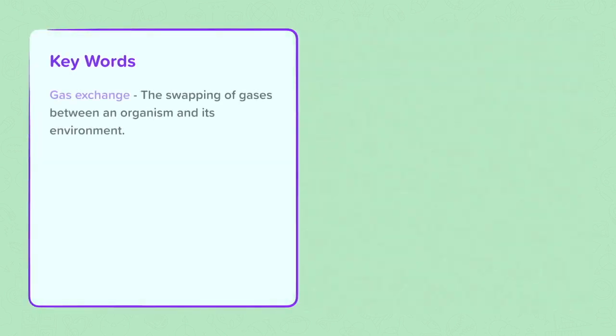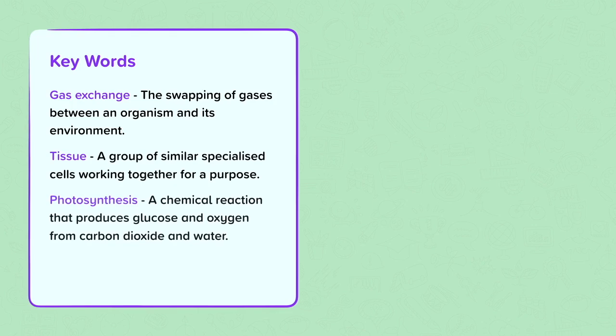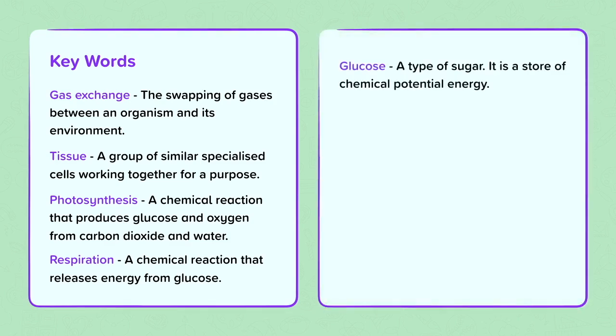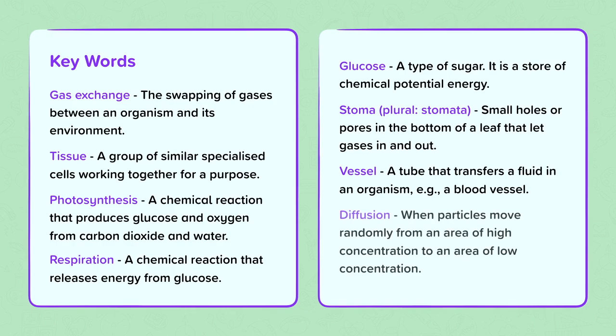Keywords: Gas exchange, the swapping of gases between the organism and its environment. Tissue, a group of similar specialized cells working together for a purpose. Photosynthesis is a chemical reaction that produces glucose and oxygen from carbon dioxide and water. Respiration, a chemical reaction that releases energy from glucose. Glucose, a type of sugar. It is a store of chemical potential energy. Stoma, plural stomata, small holes or pores in the bottom of a leaf that let gases in and out. Vessel, a tube that transfers a fluid in an organism, for example, a blood vessel. Diffusion, when particles move randomly from an area of high concentration to an area of low concentration.